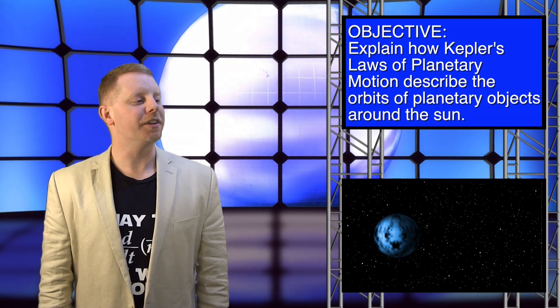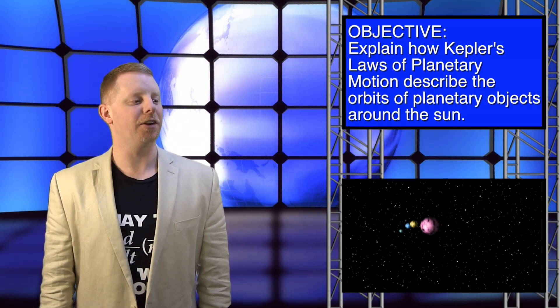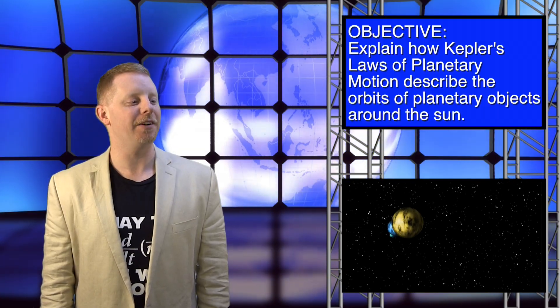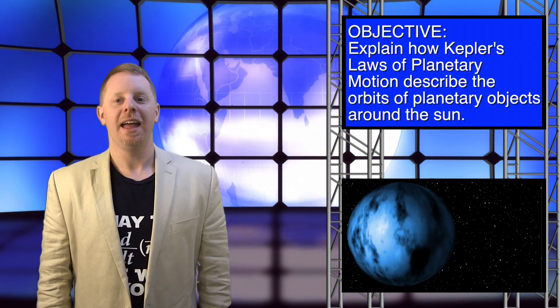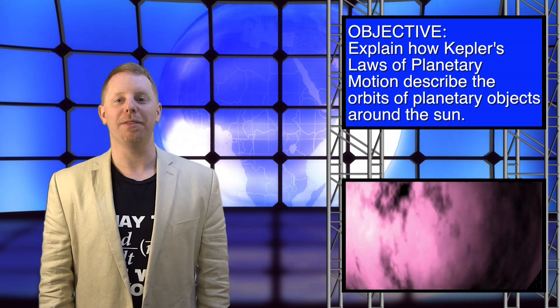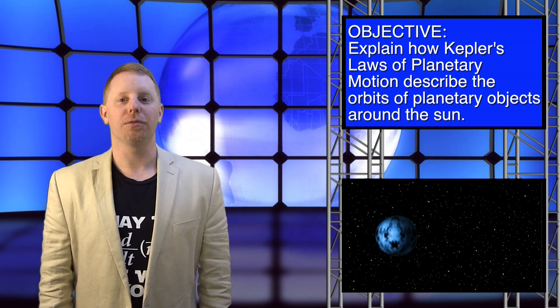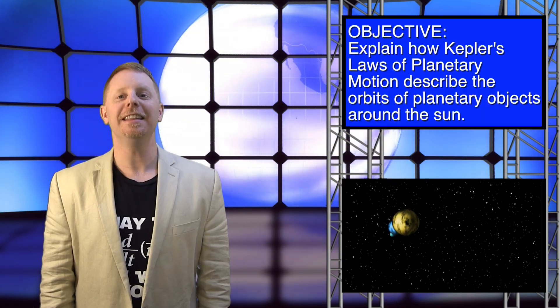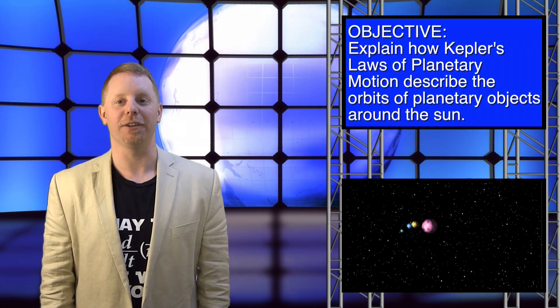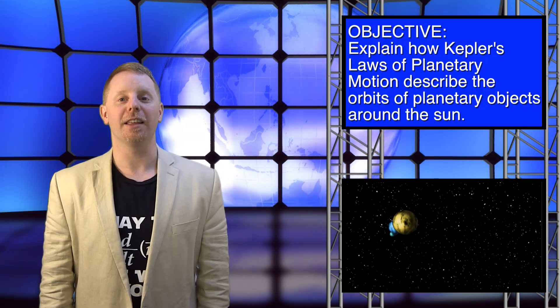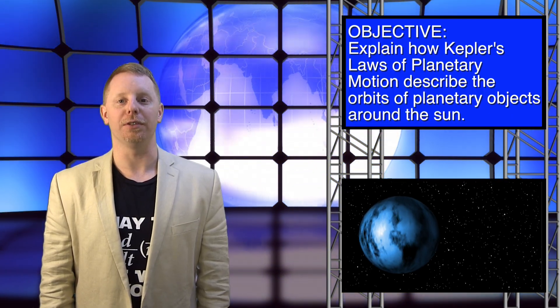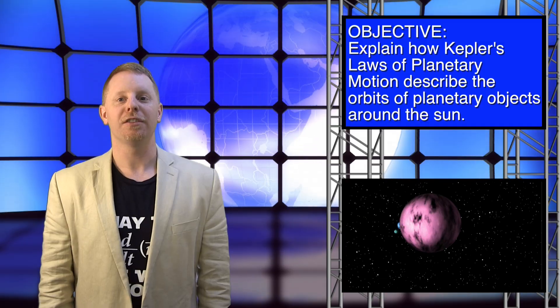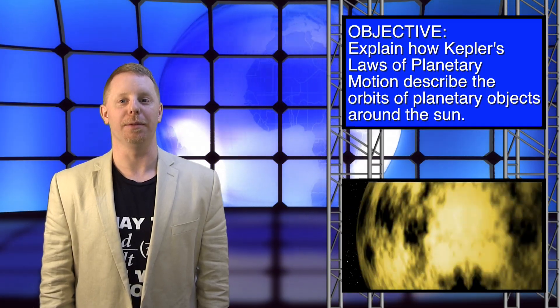Our objective today includes explaining how Kepler's laws of planetary motion describe the orbits of planetary objects around the Sun. Johann Kepler was a German mathematician and astronomer in the late 1500s and early 1600s and he did a lot to pave the way toward the 17th century scientific revolution and also set a lot of the groundwork for Newton's laws around universal gravitation. So let's take a look at his laws of planetary motion.